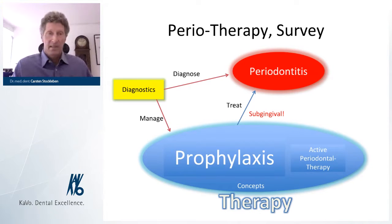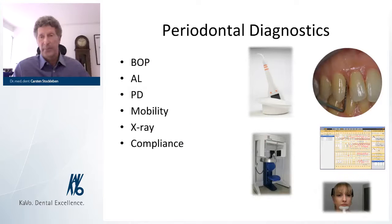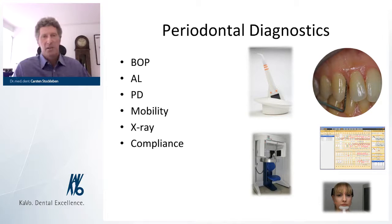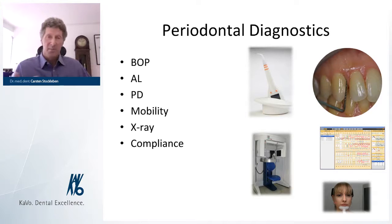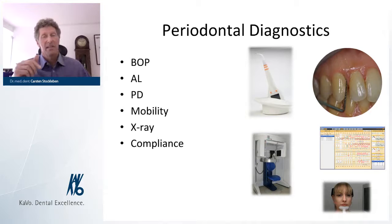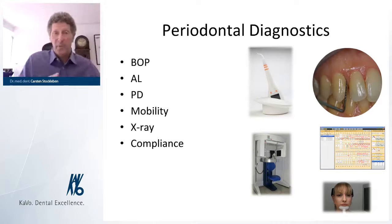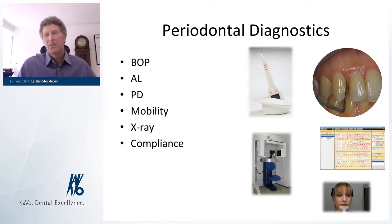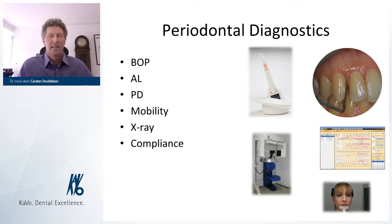The key points of interest in diagnostics are: bleeding on probing — very important; attachment loss — very important for determining light, moderate, or severe cases; pocket depths — yes, but not as important as attachment loss; mobility — important for prognosis, though prognosis can change depending on patient compliance and program quality; x-rays to assess bone; and compliance. Compliance is crucial — if a patient doesn't cooperate, you can't win. About one third of patients show good compliance, one third is hard work, and the last third is very difficult.